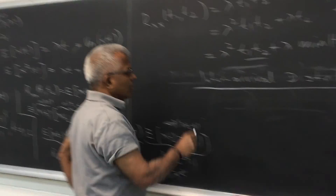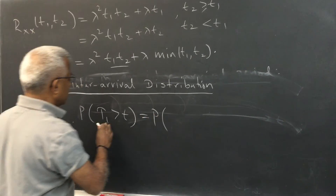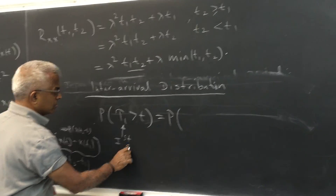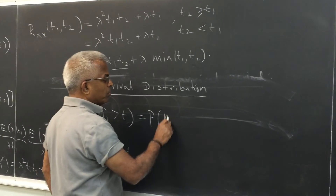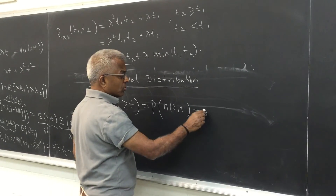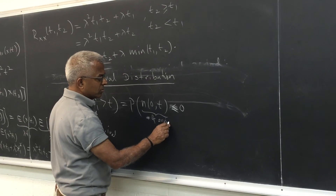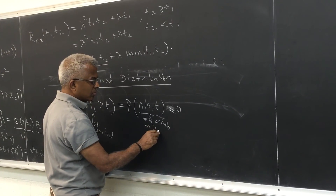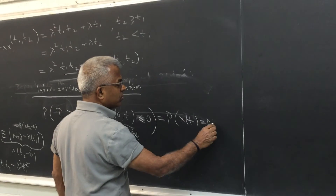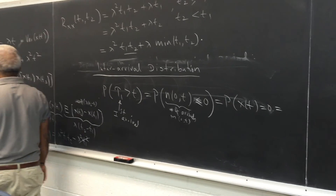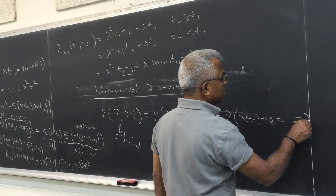For τ₁, starting with the probability that τ₁ is greater than t — this is the same as saying the first arrival is beyond t — which is the same as saying the number of arrivals in [0, t] is zero. Since the number of arrivals cannot be less than zero, this equals the probability that X(t) equals zero.